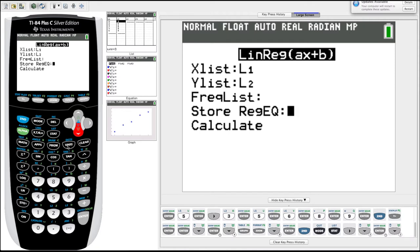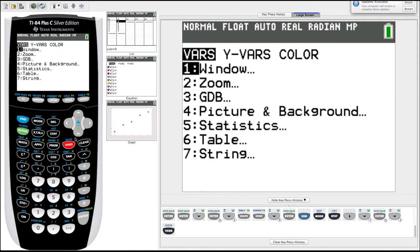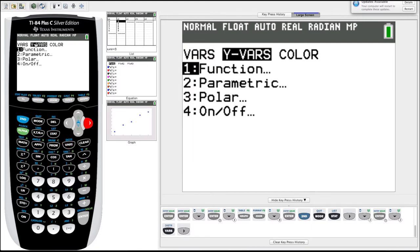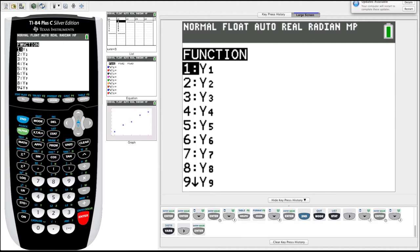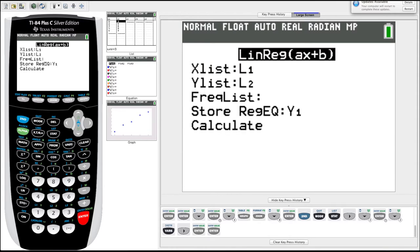And to do that, we have to go into vars, short for variables, arrow over to y variables, hit into function, and then it produces all our possible where to enter it, you know, y1, y2. We'll just enter it into y1. That's fine. So now it's going to store the equation, the linear equation into y1. Let's hit down to calculate.